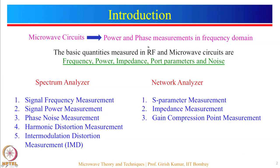Unlike low frequency circuits where voltage and currents are measured against time, in microwave circuits we usually make power and phase measurements in frequency domain. The basic quantities which are measured in RF and microwave circuits are frequency, power, impedance, port parameters which are S parameters, and noise.